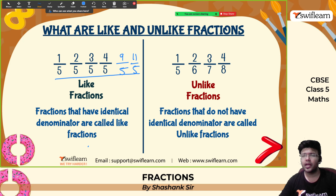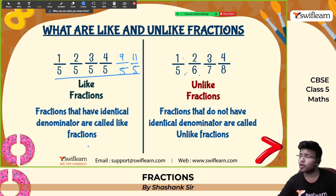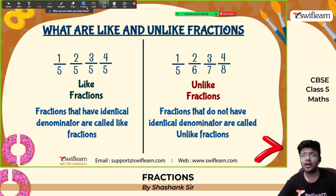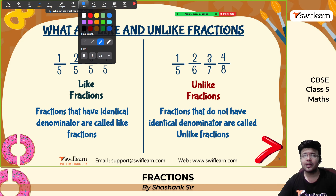Two or more fractions where the denominators are not the same are called unlike fractions. For example: 1 by 5 has denominator 5, but others have denominators 6, 7, 8 — so they are unlike fractions. Even if 3 denominators are the same and 1 denominator is different, these are also unlike fractions. All the denominators must be the same — then only they are like fractions.